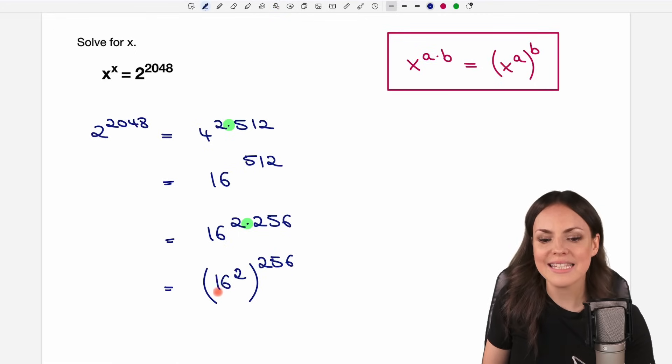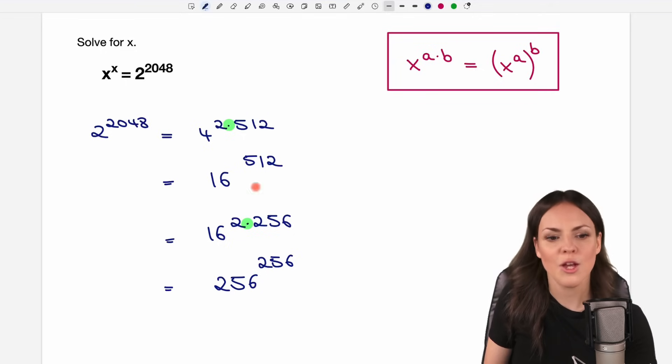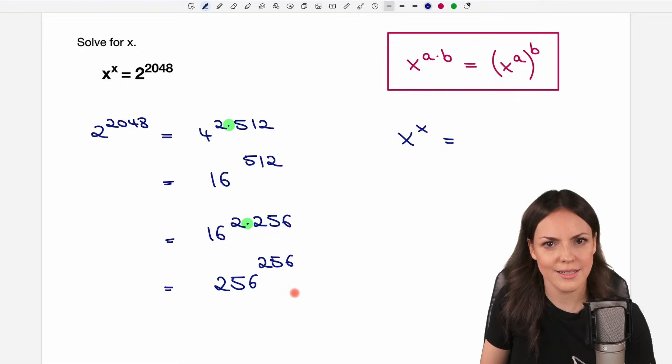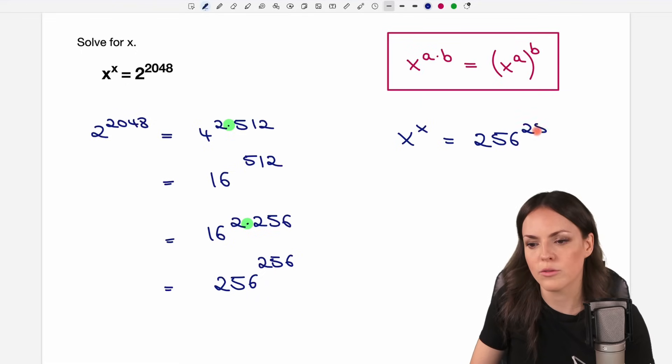Now 16 squared equals, if I calculate that, 256. And now my base and my exponent are the same. So this equation here can be written as x to the power of x, and instead of this power here, I write it as this expression that I just found that is the same. So I write it as 256 raised to the power of 256.